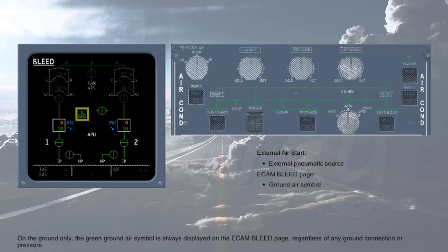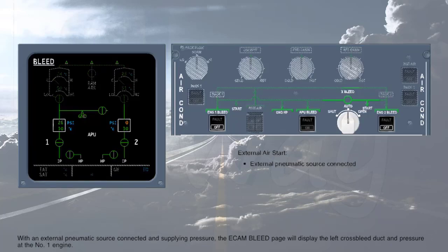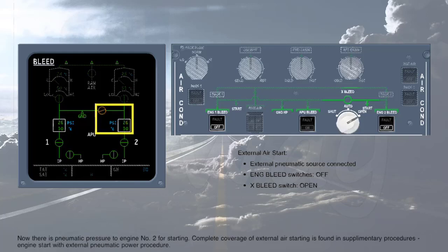On the ground only, the green ground air symbol is always displayed on the ECAM bleed page regardless of any ground connection or pressure. With an external pneumatic source connected and supplying pressure, the ECAM bleed page will display the left cross-bleed duct and pressure at number 1 engine. Ensure the engine bleed switches are selected off, then to provide pneumatic pressure to engine number 2, touch the cross-bleed selector switch to open the cross-bleed valve. Now there is pneumatic pressure to engine number 2 for starting.